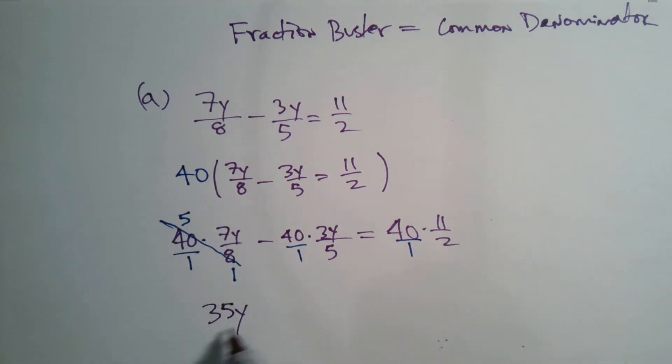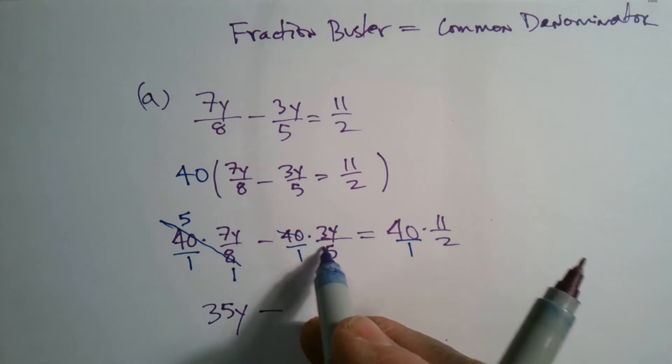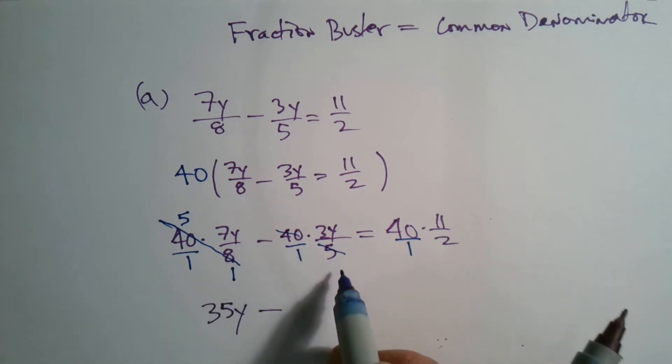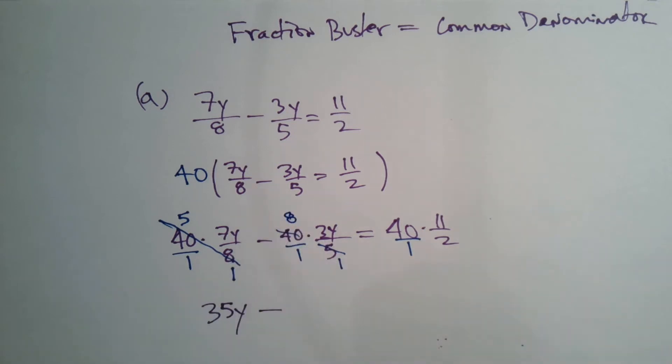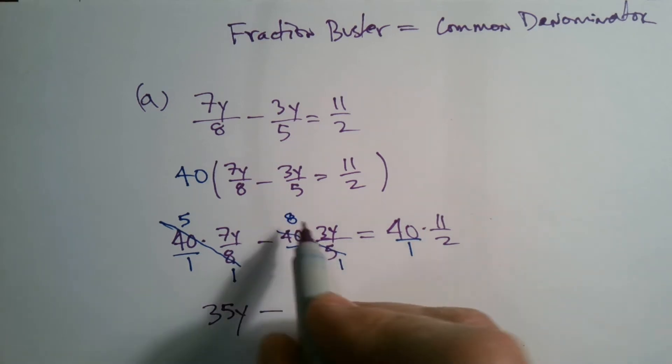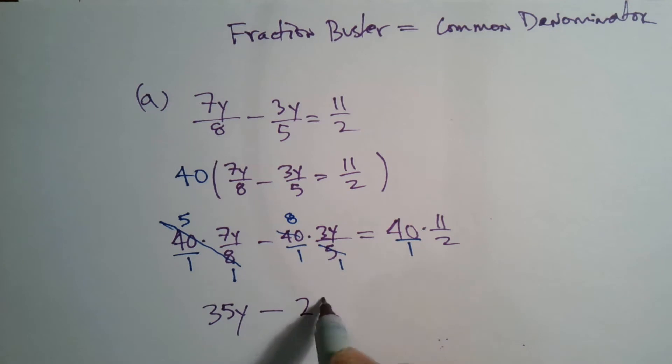Notice I started with a fraction with this term, I utilize the fraction buster, now I just have a term without a fraction. So the next one would be minus what? Well, 40 over 1 times 3 over 5. Again, the 40 and the 5 can simplify diagonally. 5 goes into 5 once, 5 goes into 40 8 times, and then I just multiply 8 times 3 which is 24, so I have 24y.